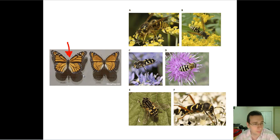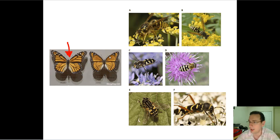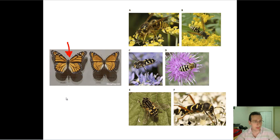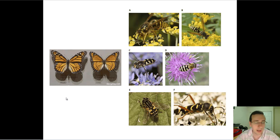The viceroy was thought to not be as toxic as the monarch, but since it looks just like the monarch, it sends almost the same message, and birds tend to avoid the mimic because it resembles the model. If a bird ate the viceroy first, it might still eat it again, but if it ate a monarch first, it will learn to avoid that pattern and consequently avoid the viceroy as well.